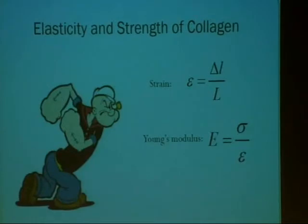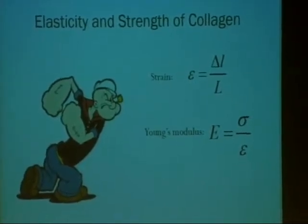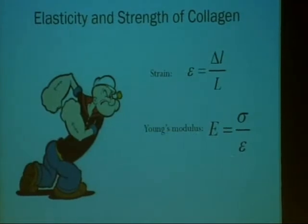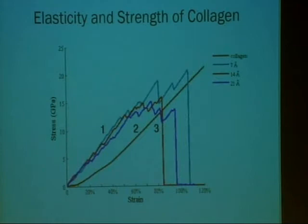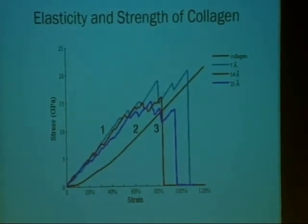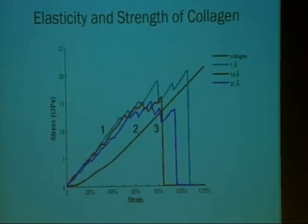The last term is Young's modulus, which enables us to tell if a material is stiff or elastic. For a stiff material, the Young's modulus would be high, because it is defined as the ratio of stress over strain — the amount of stress we have to apply in order to create a certain strain. For a ductile material, we have a low Young's modulus. Returning to our graphs, we can see that the collagen in the hydroxyapatite system was stiffer than the pure collagen, and it was also stronger, with the peaks of disassembling above those of the pure collagen.